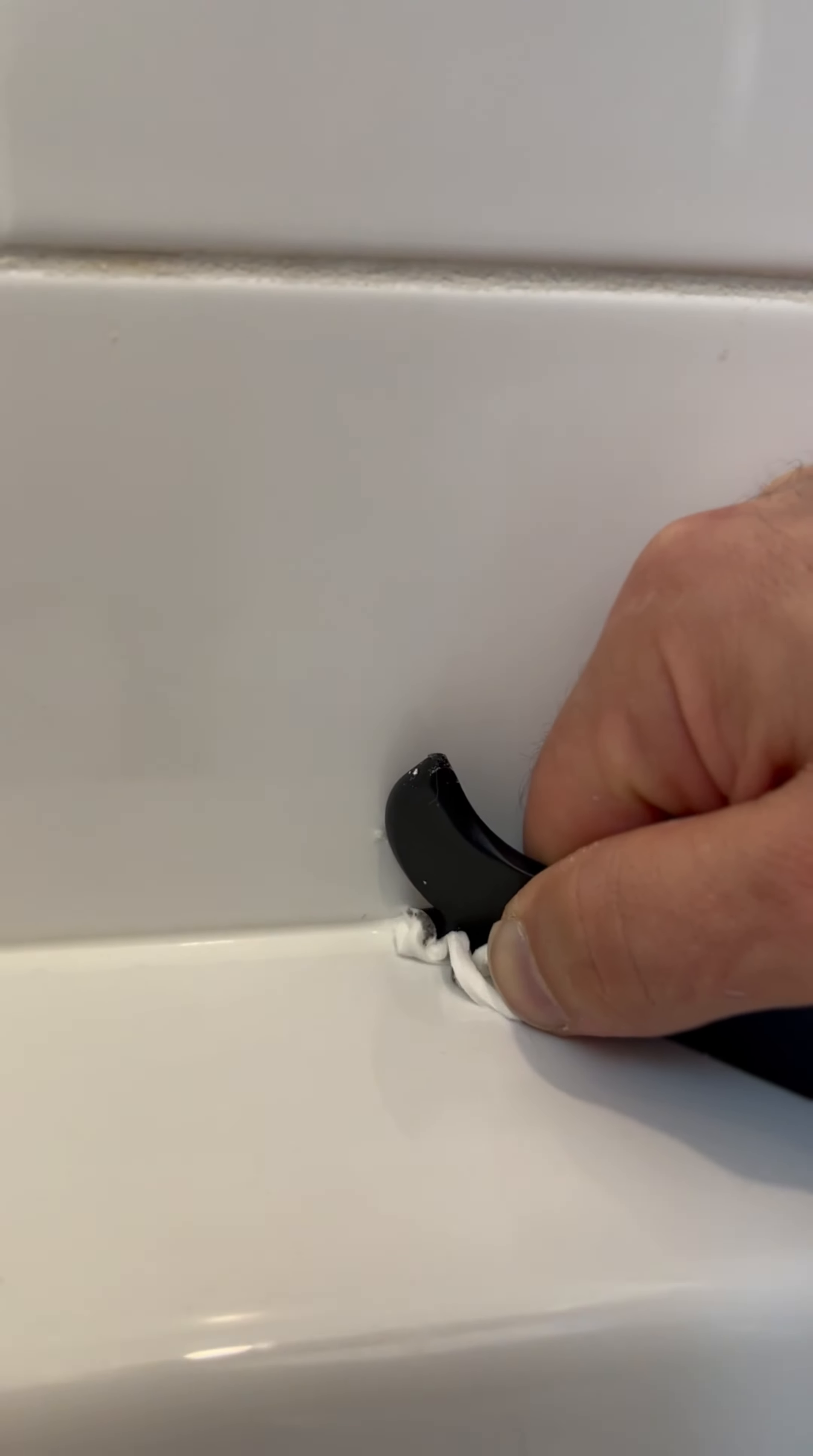Once you've laid the bead down, it's time to smooth it out and make sure that it's firmly adhered to both surfaces. In this case, we use this tool from DAP and it makes sure that you get a perfect, even, and clean bead of silicone because looks aren't everything, but they are a big deal. So do it right and do it once.